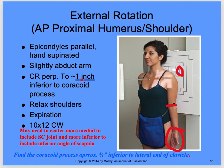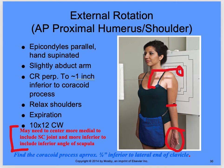Central ray is perpendicular to one inch inferior to the coracoid process. Relax the shoulders. Keep in mind that for the shoulder, you may need to center more medial to include the SC joint, and more inferior to include the inferior angle of the scapula. You may need to adjust your light field here — I usually split the jugular notch and then make sure that I have that light field above the shoulder.